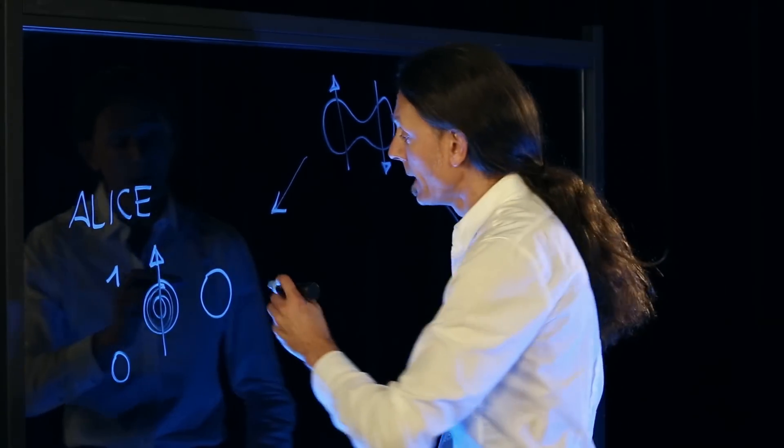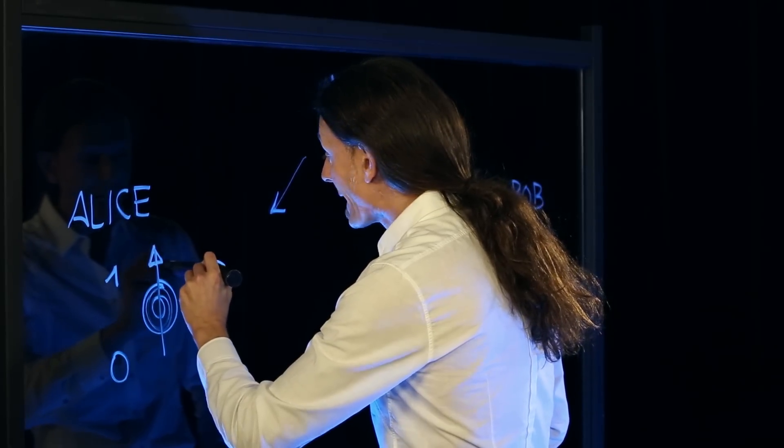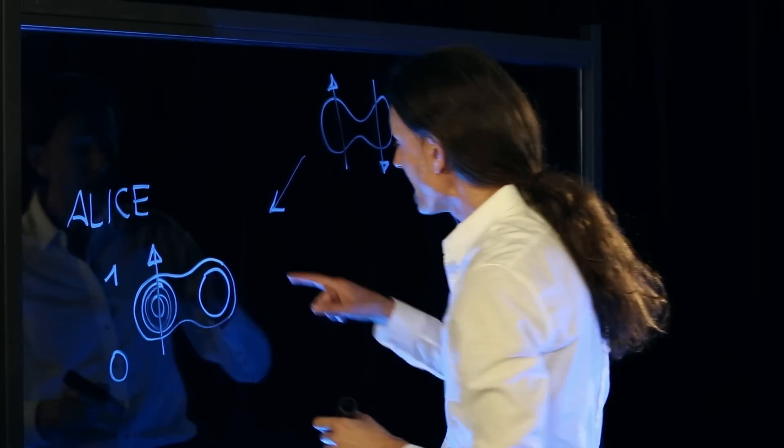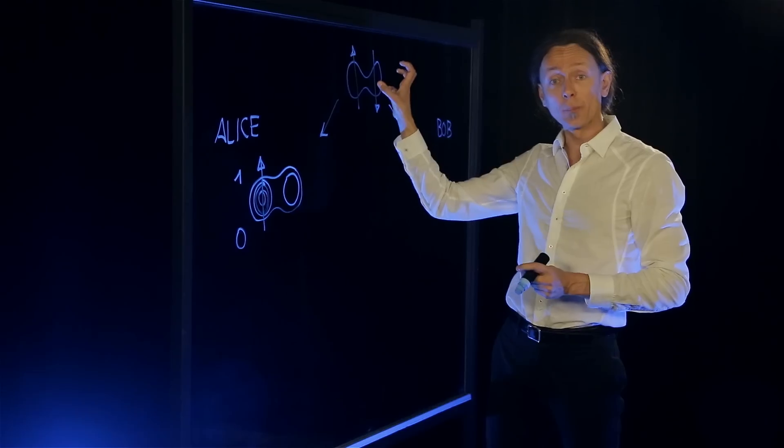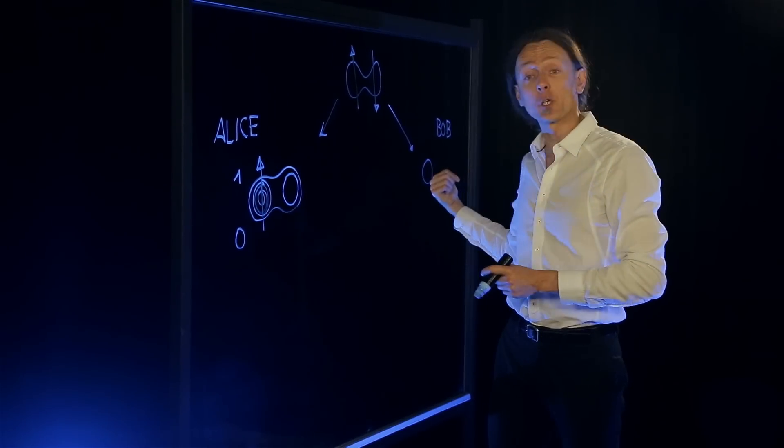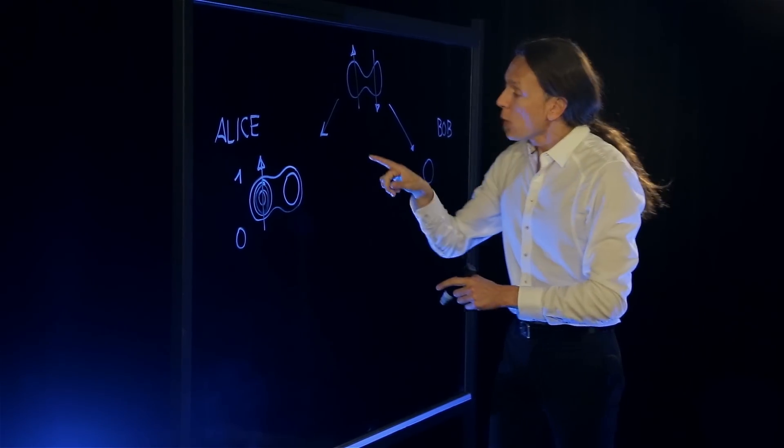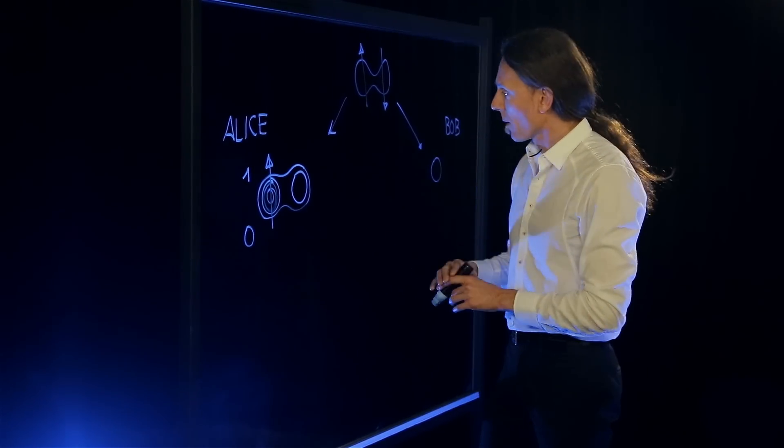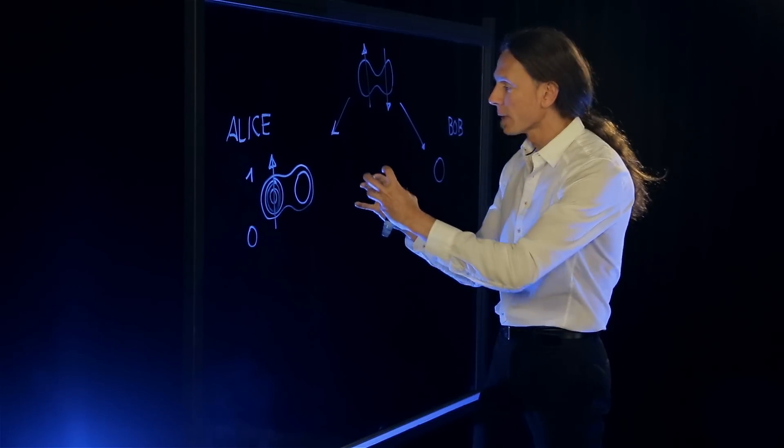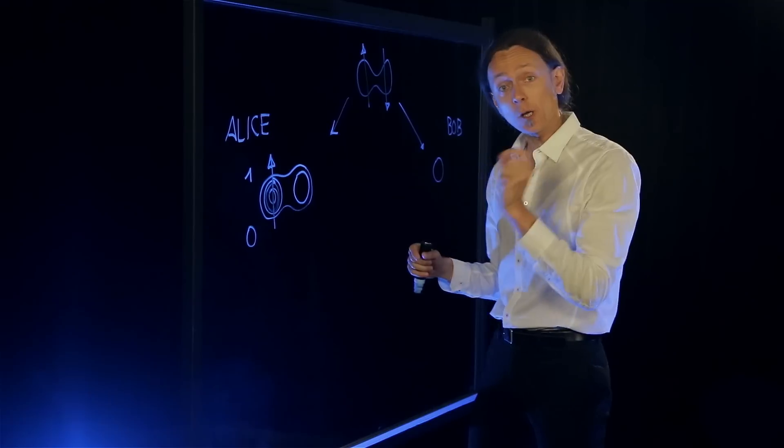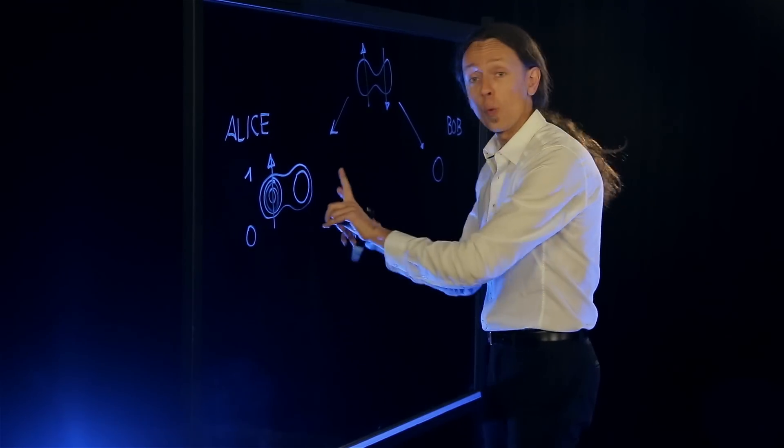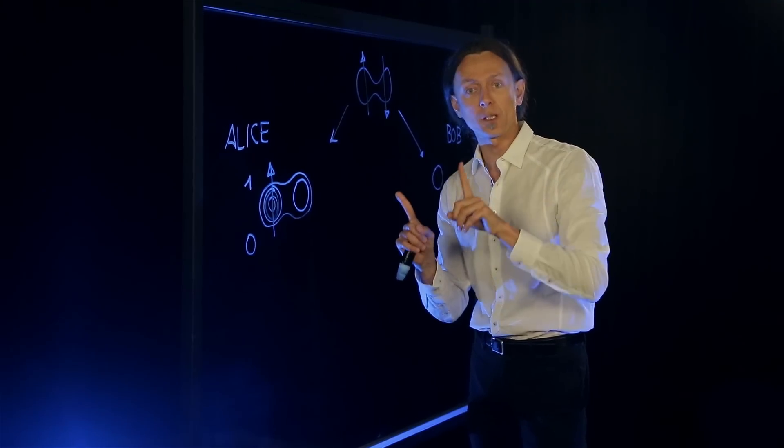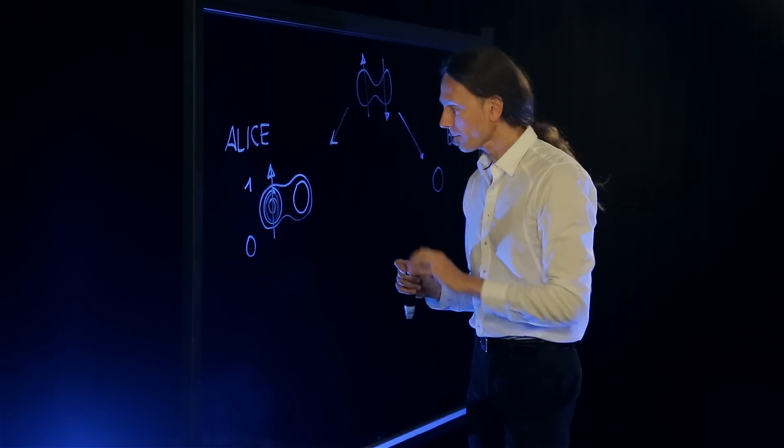The way to do it now is for Alice to measure together the electron where she has the information and the other electron that comes from that entangled pair, the other half of which has gone to Bob. What Alice can now do is something very special that I will not attempt to explain, it's quite complicated. She can measure what's called the parity of these two electrons. So she's not going to try and look where each one of them is pointing, she's only going to try and see whether they point opposite or the same direction. This can be done.